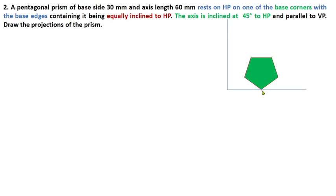This corner is touching HP. You can check another condition: that corner has two base edges. These are the two base edges. This corner has two edges which are equally inclined to HP — yes, this condition also satisfies. This is equally inclined to HP.